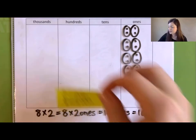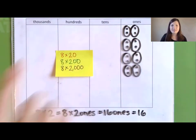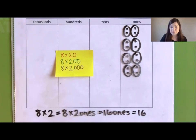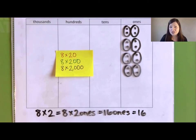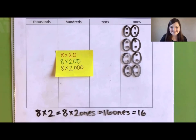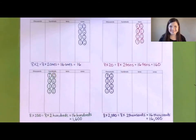Now, here are 3 more expressions. In a moment I'll ask you to pause the video to do some work. I want you to use discs to represent each of these expressions on your place value chart, then solve each expression in unit form, and write the product in standard form, just like we did here. When you get back, we'll compare. Welcome back! Be sure to compare your work to mine and make any changes if you need to. Now, what patterns did you notice as you solved these multiplication problems in unit form? Pause the video to talk about the patterns that you notice.